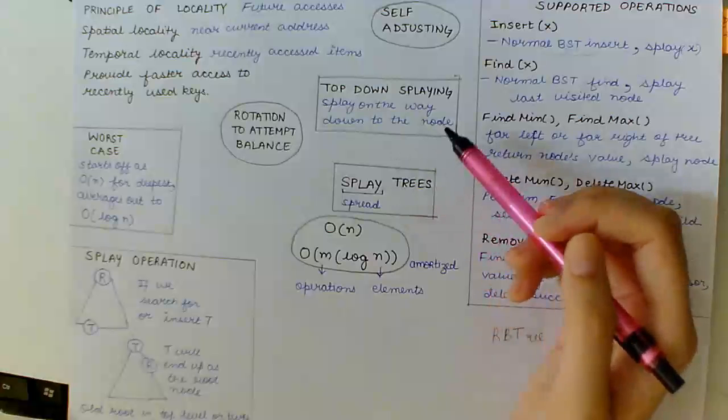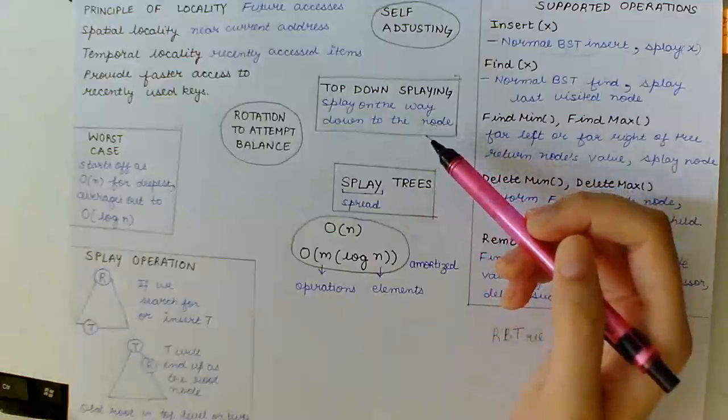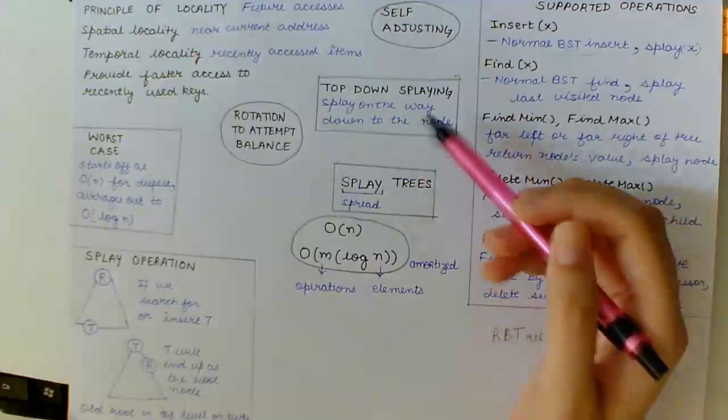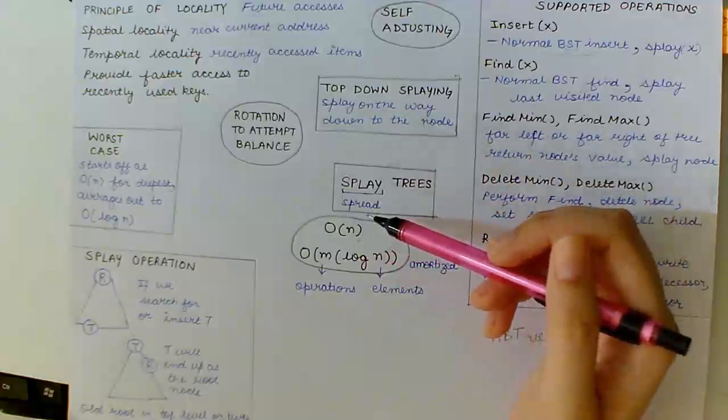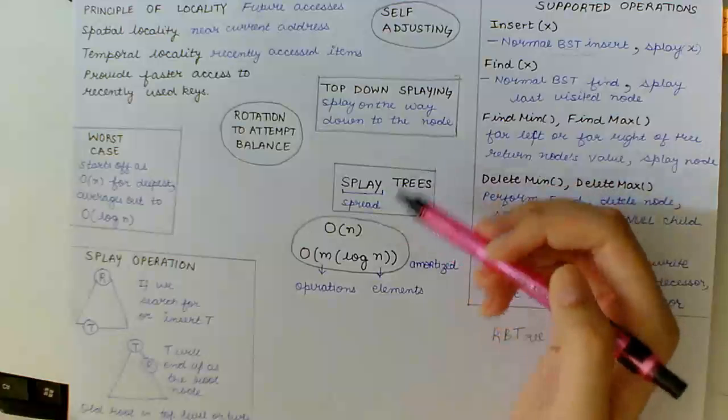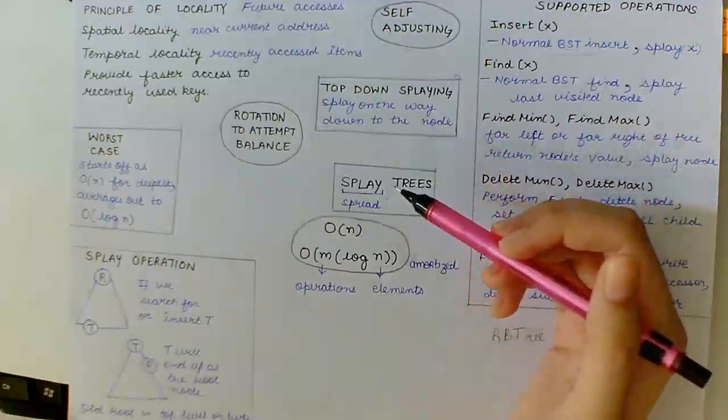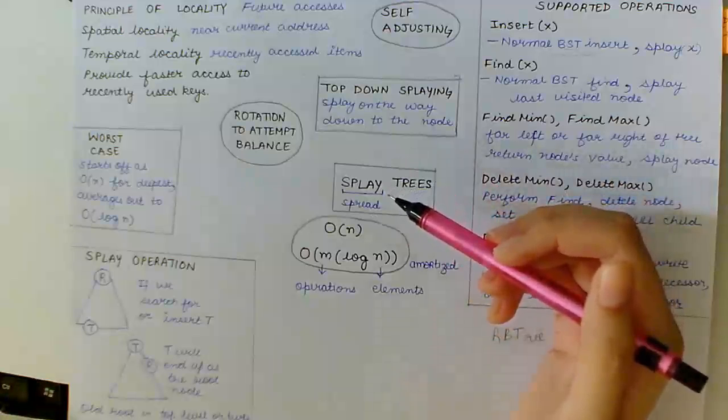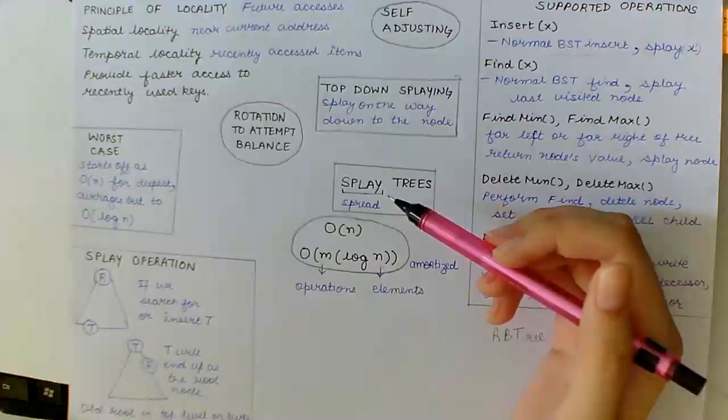There is also top-down splaying. Rather than walking down the tree to first find the value and then splaying back up, we can splay on the way down. We will be pruning the big trees into smaller and smaller trees as we walk, cutting off unused pathways.